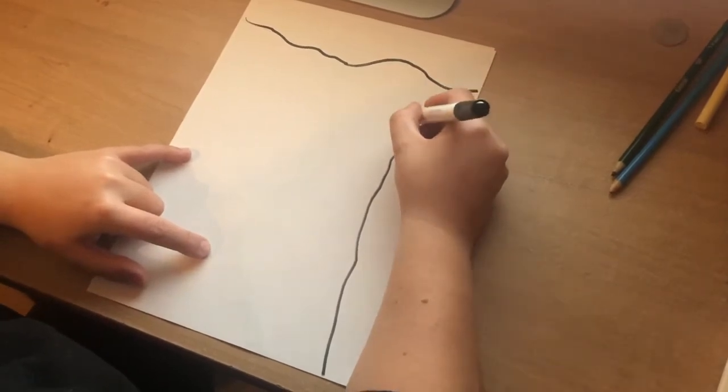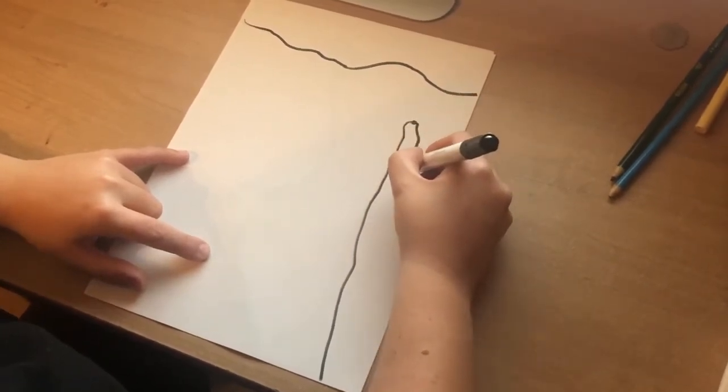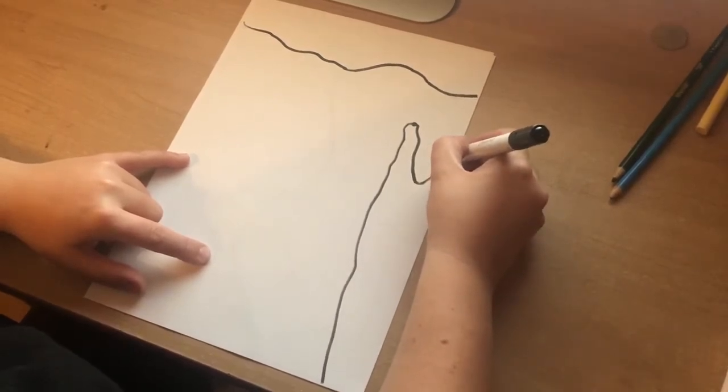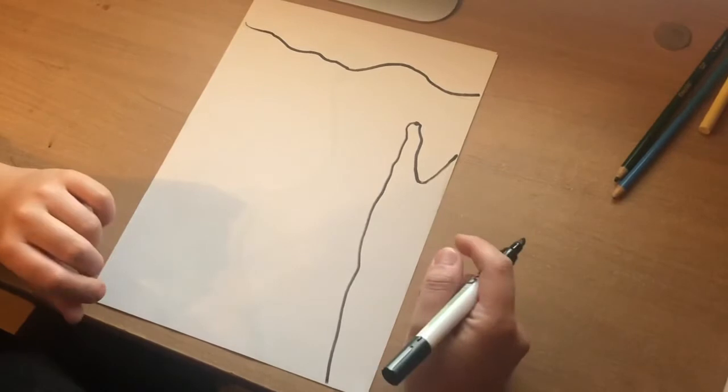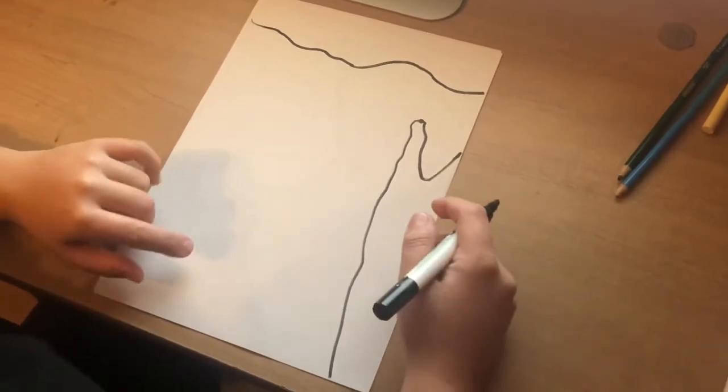And that runs right the way down to the bottom of Egypt, and again just going to bring it back up and it's just going to come off of the page as it does go into Saudi Arabia as well. So there is our Red Sea.